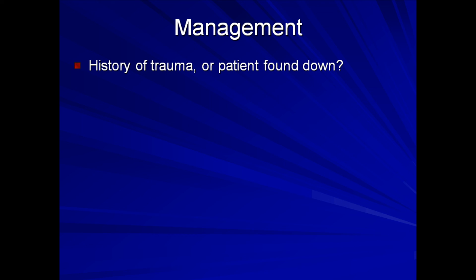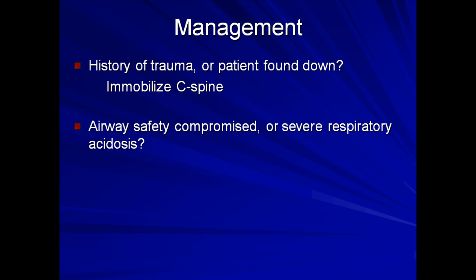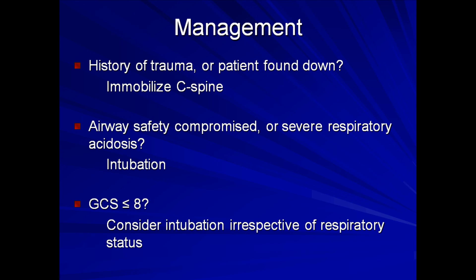First, is there a history of trauma, or was the patient found down under unclear circumstances? If so, the cervical spine should be immobilized immediately and formally cleared by radiographs. Next, is the airway safety compromised, or is there severe respiratory acidosis? If so, the patient should be emergently intubated. Is the patient's Glasgow Coma Score less than or equal to 8? If so, many authorities would consider intubation irrespective of respiratory status.